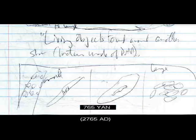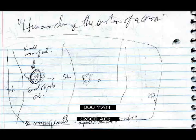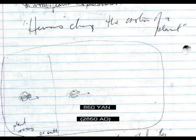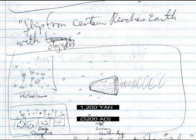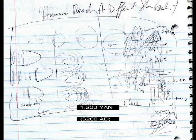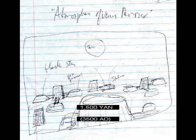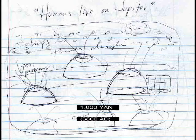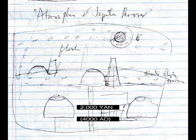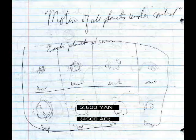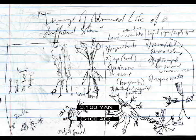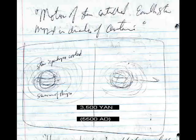Bacteria made of DNA. Humans change the motion of a moon. Humans change the motion of a planet. Ship impacts Jupiter's surface. First image of surface of Jupiter. Ship from Centauri reaches Earth with objects. Humans reach a different star — Centauri. Atmosphere of Venus removed. Humans live on Jupiter. Atmosphere of Jupiter removed. Humans have ships at ten stars. Motion of all planets under control. Humans reach the center of the Earth. Image of advanced life of a different star. Motion of star controlled.